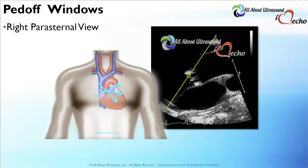Another very often forgotten view is the right parasternal view. From this view, it can be helpful both for the PEDOF window as well as for 2D imaging. Often, this view can provide higher velocities due to the angle of inclination. The best positioning for this is the right lateral decubitus position, with the patient's arm positioned up and out of the way.